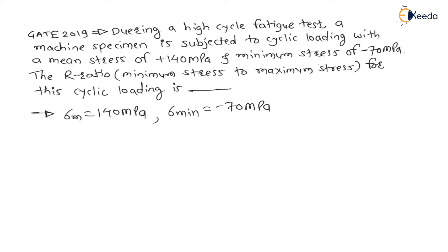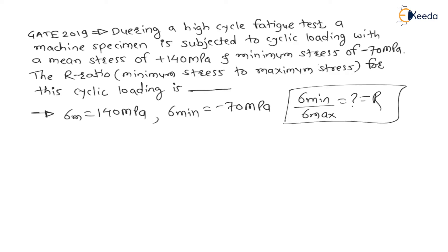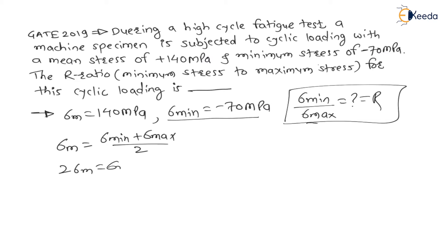We have to find minimum stress divided by maximum stress — this ratio is called R. Minimum stress is given. We know that mean stress equals minimum stress plus maximum stress divided by 2. Therefore, 2 times mean stress equals minimum stress plus maximum stress.